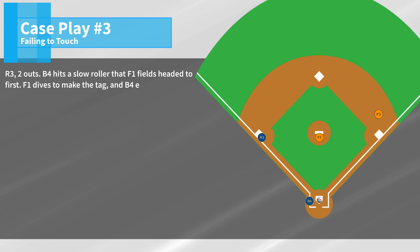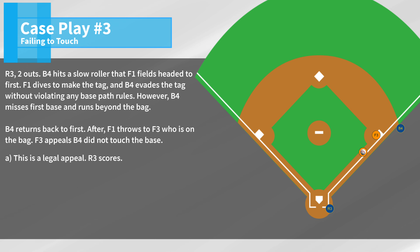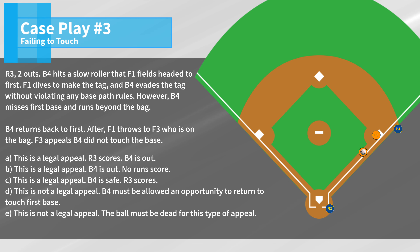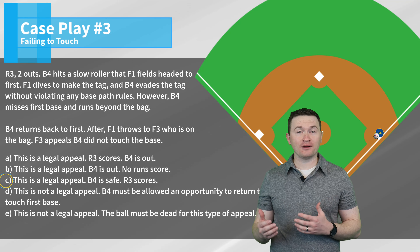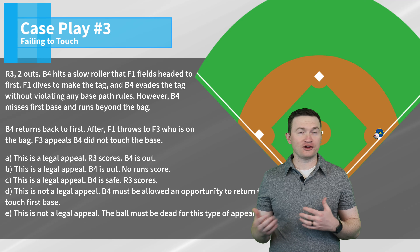Case play three: R3, two outs. B4 hits a slow roller that F1 fields heading to first. F1 dives to make the tag and B4 evades without violating any base path rules. However, B4 misses first base and runs beyond the bag. B4 returns back to first, and after F1 throws to F3 who is on the bag, F3 appeals that B4 did not touch the base. The correct answer is C — this is a legal appeal, but there's not going to be an out because the batter runner has already corrected their mistake by coming back and touching first. So the play is going to stand and there aren't going to be any outs.